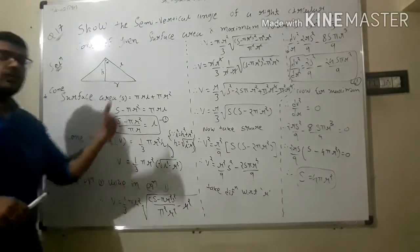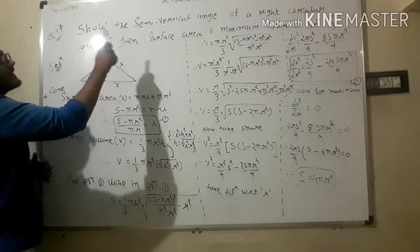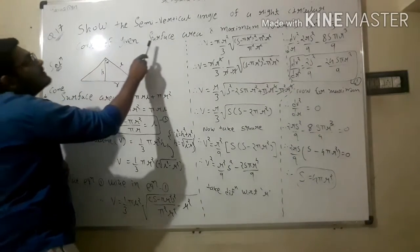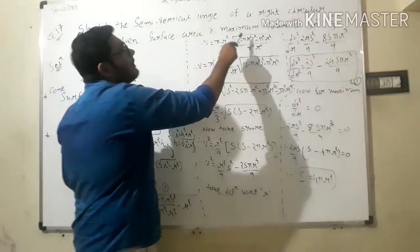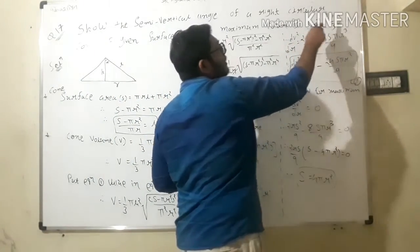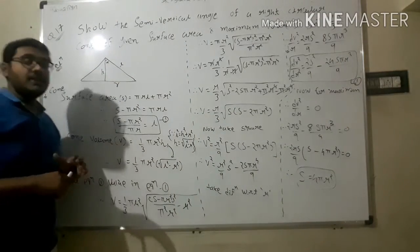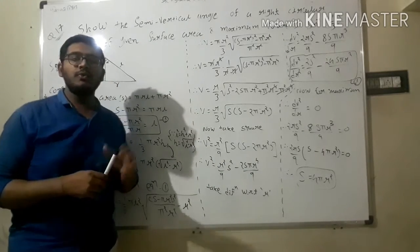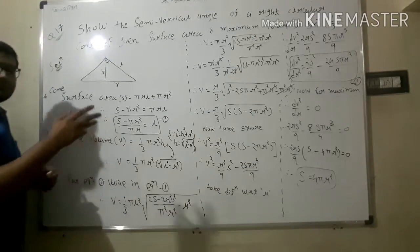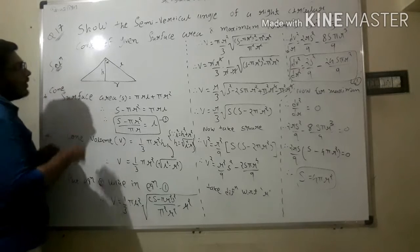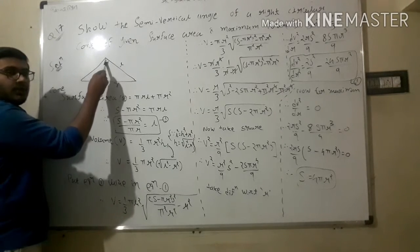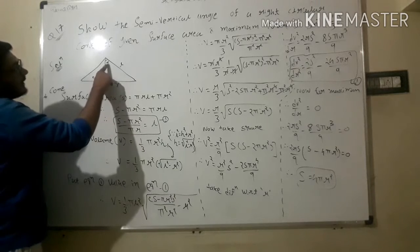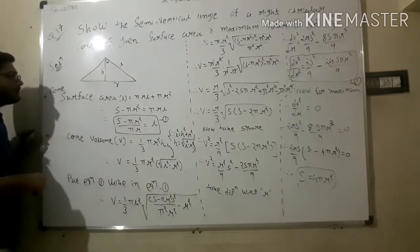So let's see our question: the semi-vertical angle of a right circular cone of given surface area and maximum volume is sin⁻¹(1/3). This question is very conceptual, so we need to learn it in depth. First of all, we need to draw a cone — let h be its height, l be its slant height, and let the angle be alpha.